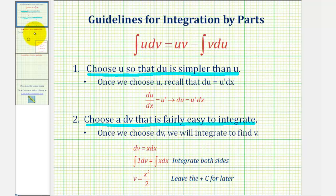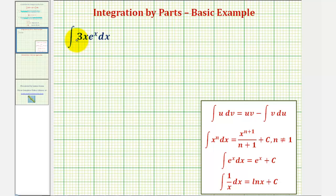So going back to our example, let's let u equal three x. Notice how the derivative of u is simpler. It's just a constant. And let's let the remaining part, e to the x dx, be equal to dv. Notice here, e to the x is going to be easy to integrate.